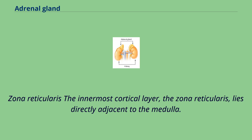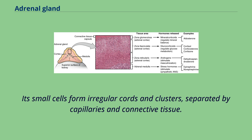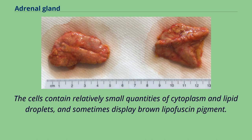The innermost cortical layer, the zona reticularis, lies directly adjacent to the medulla. It produces androgens, mainly dehydroepiandrosterone (DHEA) sulfate and androstenedione in humans. Its small cells form irregular cords and clusters, separated by capillaries and connective tissue. The cells contain relatively small quantities of cytoplasm and lipid droplets, and sometimes display brown lipofuscin pigment.